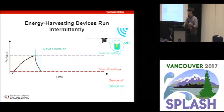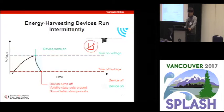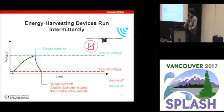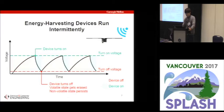This is where you do the actual computation that you desire. When the energy gets depleted, the device again turns off, and all the volatile state including the register file and stack will get erased, while non-volatile states such as flash or FRAM will persist. This charging and discharging cycle repeats until you finish your desired computation.